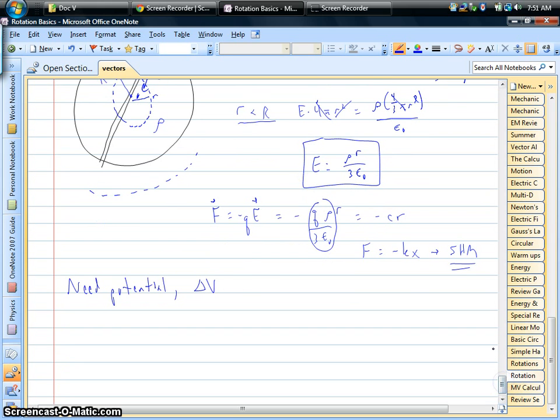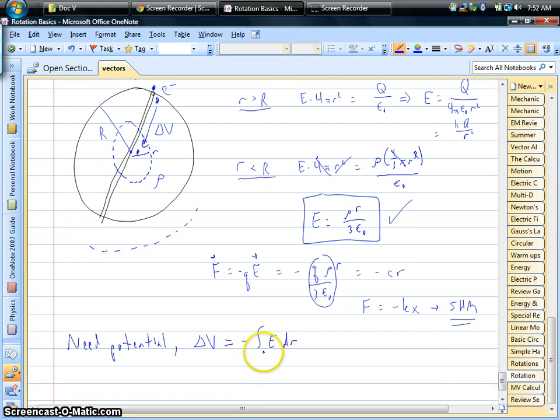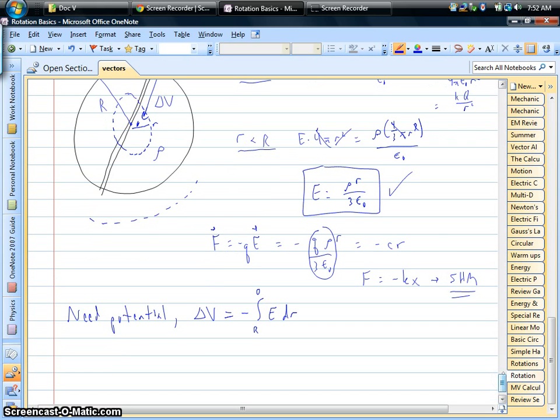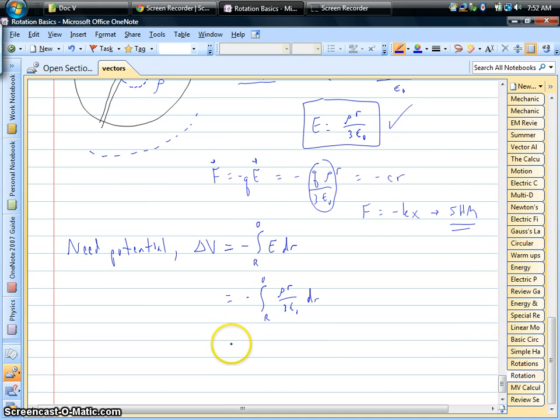The change in voltage in electrostatics, we need to integrate the electric field that we're moving through. And we just found that. We know the field inside this thing. So we want to find out what's our change in potential if we go from the surface down to the center as it falls in. We can do that if we put in this field that's linear with position, with the radius.